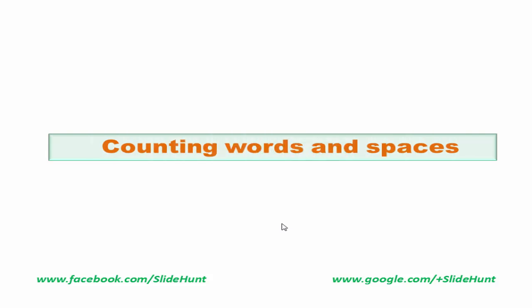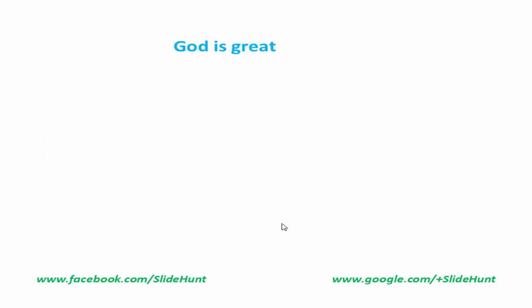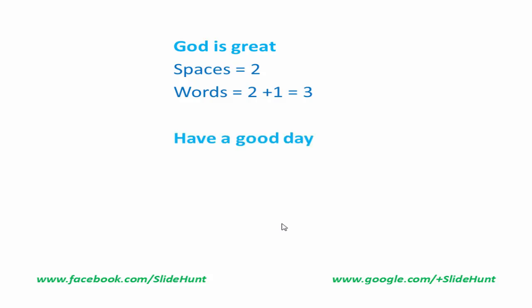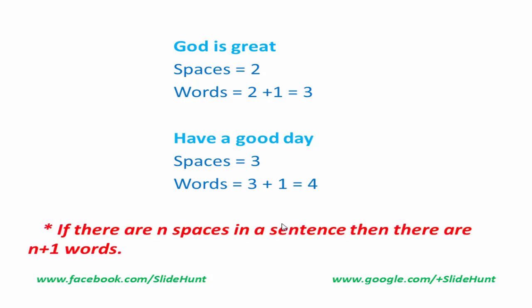Normally, when we write a sentence, we give a single space between two words. So, the number of words in a sentence is one more than the number of spaces. For example, the sentence 'God is great' has two spaces and three words. The sentence 'Have a good day' has three spaces and four words. So, if there are n spaces in a sentence, then there are n plus one words.